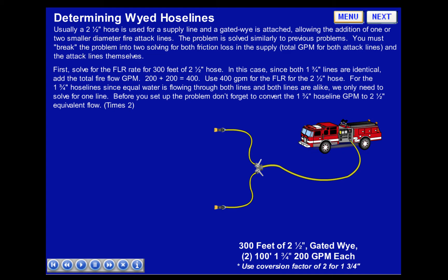For the 1¾-inch hose lines, since equal water is flowing through both lines and both lines are alike, we only need to solve for one line. Before you set up the problem, don't forget to convert the 1¾-inch hose line GPM to 2.5-inch equivalent flow, or times two.